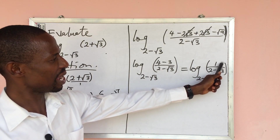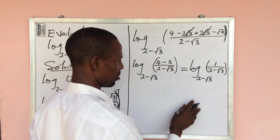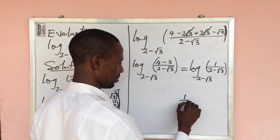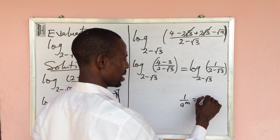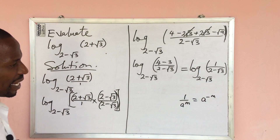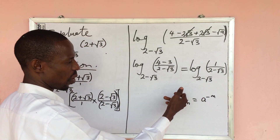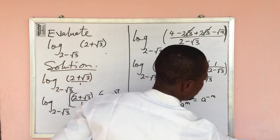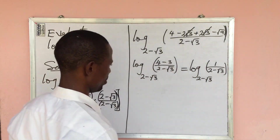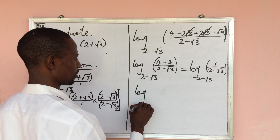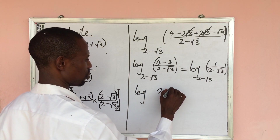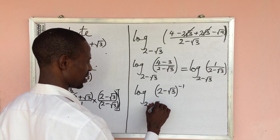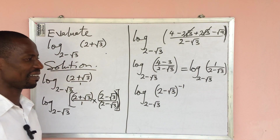We can rewrite this expression using the law of indices, which says that 1 over a^m equals a^(−m). Applying that here, we get log[(2 − √3)^(−1)] base (2 − √3).